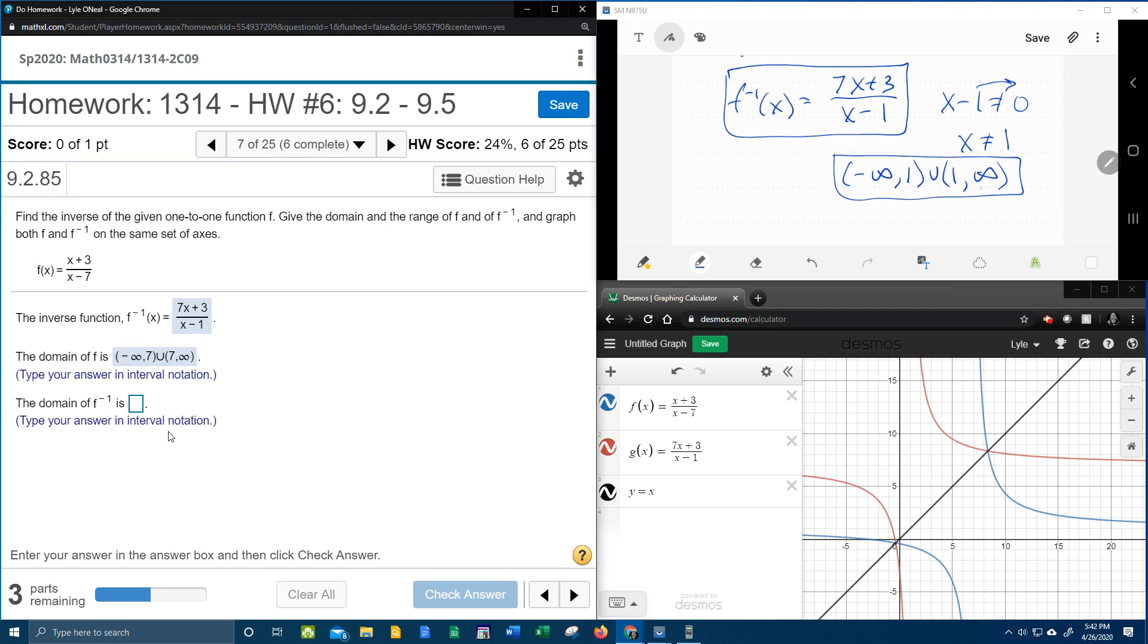Everything from minus infinity to infinity, excluding 1. And so let's see if that is correct. Negative infinity to 1, and don't forget the u. The u is the glue that sticks the two pieces together.